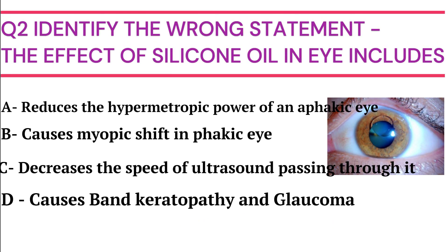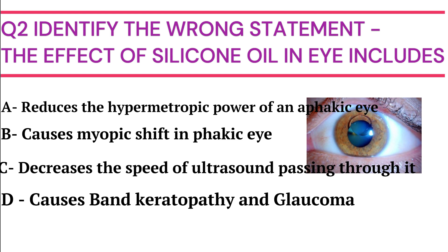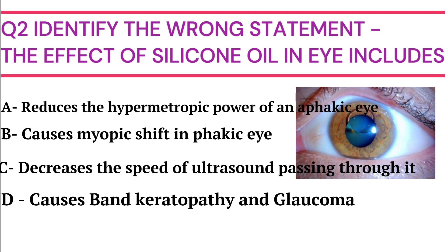Identify the wrong statement. The effect of silicone oil in the eye includes: Option A - reducing the hypermetropic power of an aphacic eye, Option B - causes myopic shift in phacic eye, Option C - decreases the speed of ultrasound passing through it, Option D - causes band keratopathy and glaucoma. The answer is Option B.